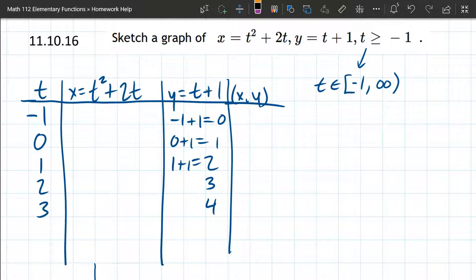Alright, that's all the y values. So now we're going to look at the x values. So we got negative 1 squared plus 2 times negative 1. So negative 1 squared is 1, minus 2 is negative 1.